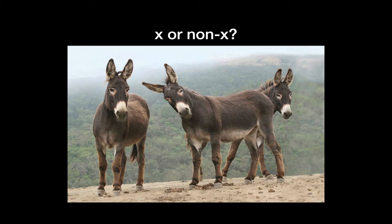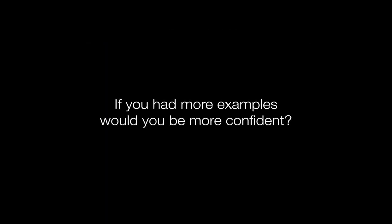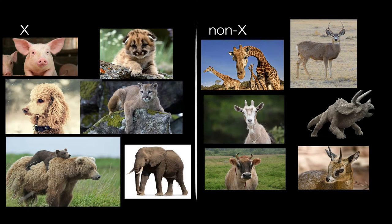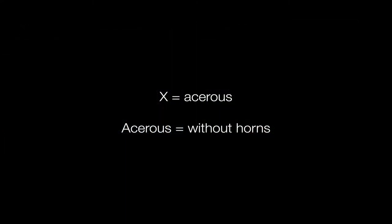What happens if I give you more examples? Would you be more confident in your decision? I'm guessing you'd think yes. Here they all are, categories on the left are X, on the right non-X. By now you probably figured it out. An X means acerous, which means without horns. Burros don't have horns, so burros are an X.